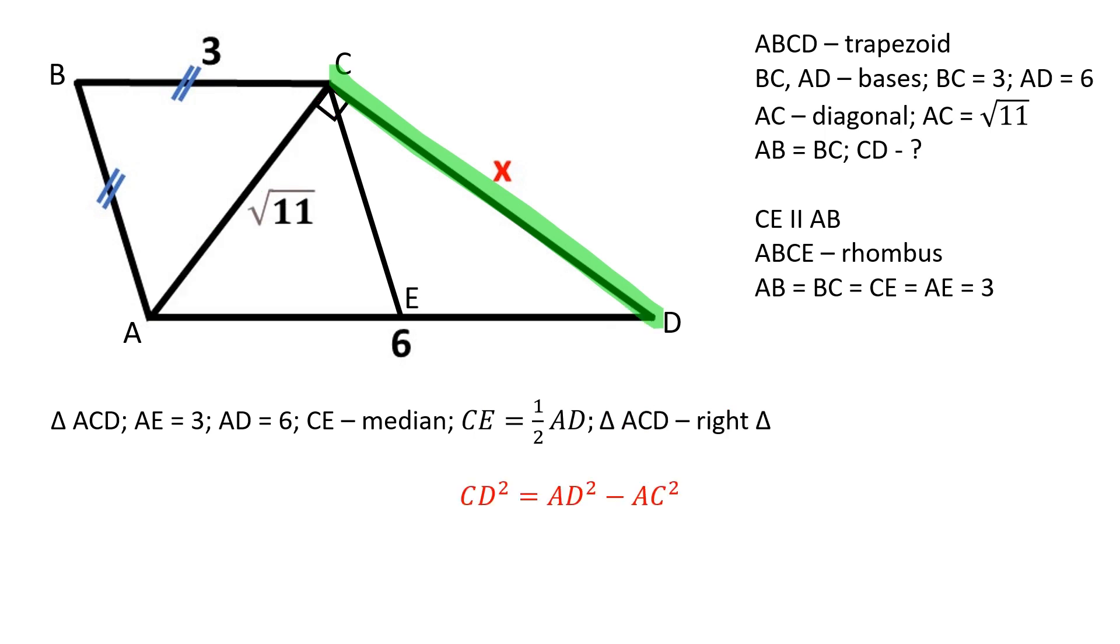We can find CD using the Pythagorean theorem. CD is equal to 5.